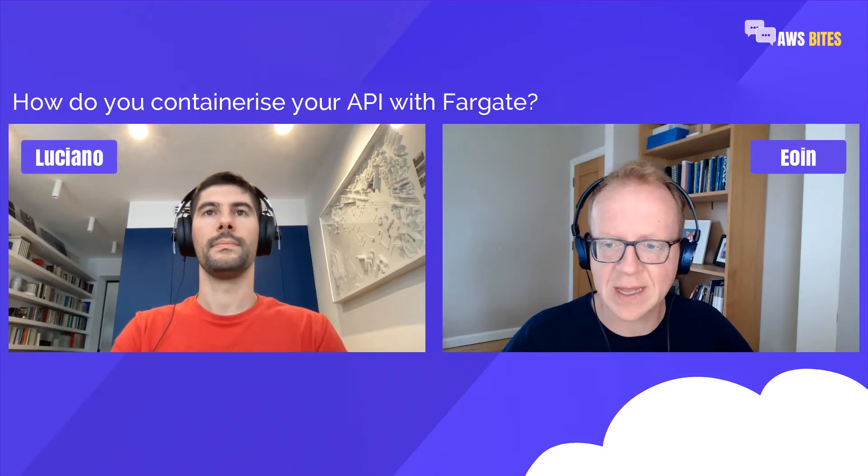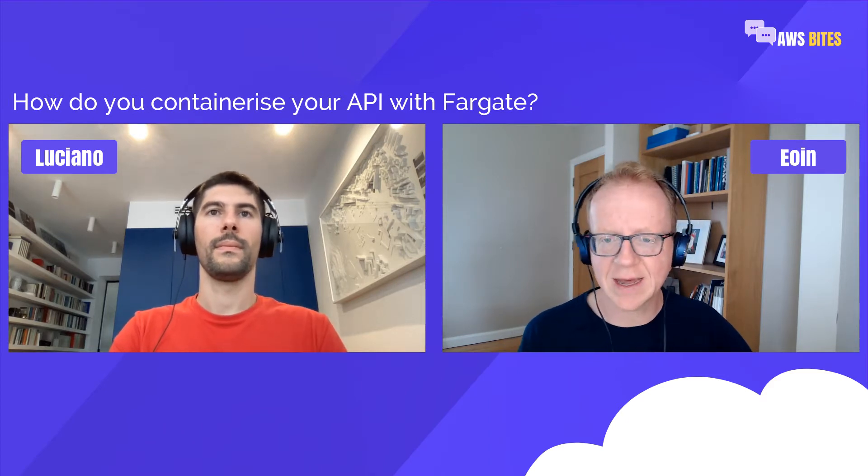A couple of episodes back we talked about the process of migrating a monolithic application to AWS using EC2, load balancers, S3 and RDS. Today we want to talk about a slightly different approach where we're going to use containers instead of EC2 and deploy them into Fargate. We're going to cover all the components you need in that architecture, why you choose Fargate over some of the alternatives, and some CDK tricks to help you get started faster. My name is Owen, I'm here with Luciano, and this is the AWS Bytes podcast.